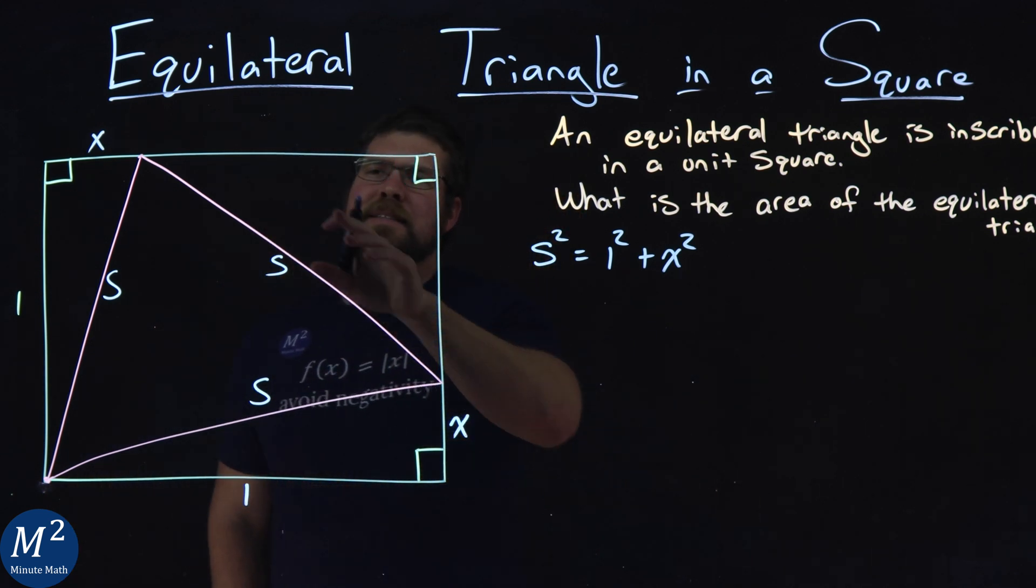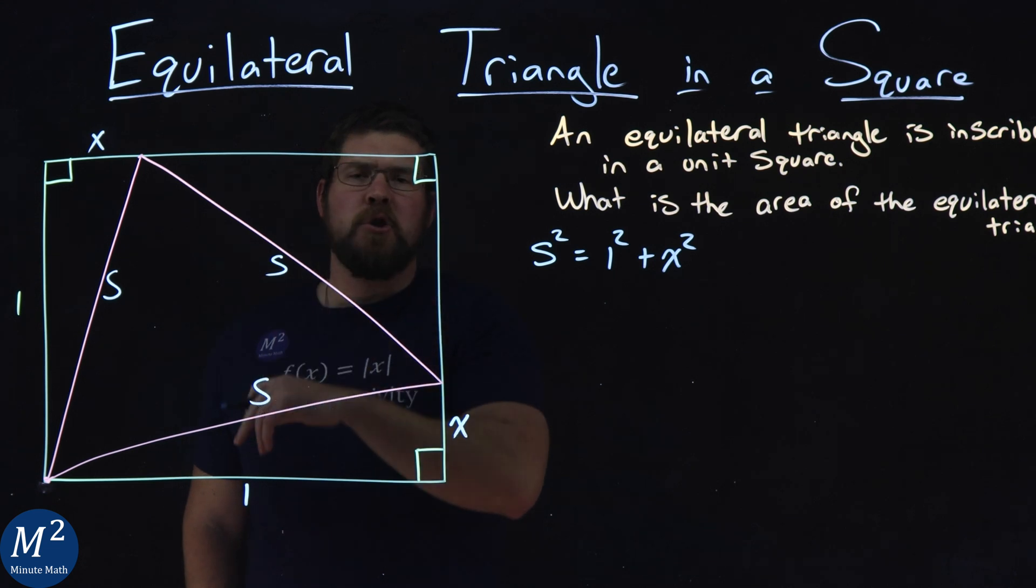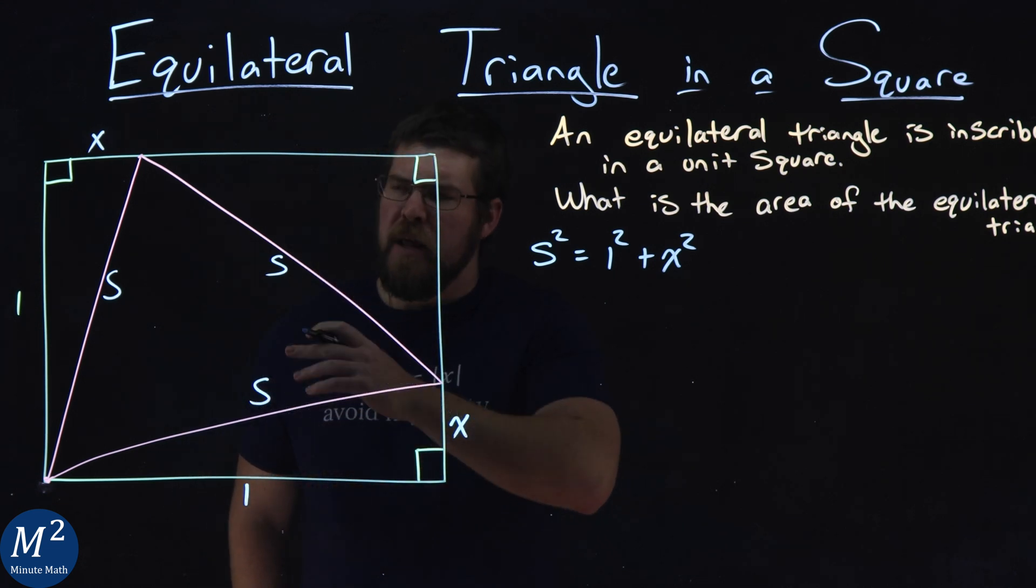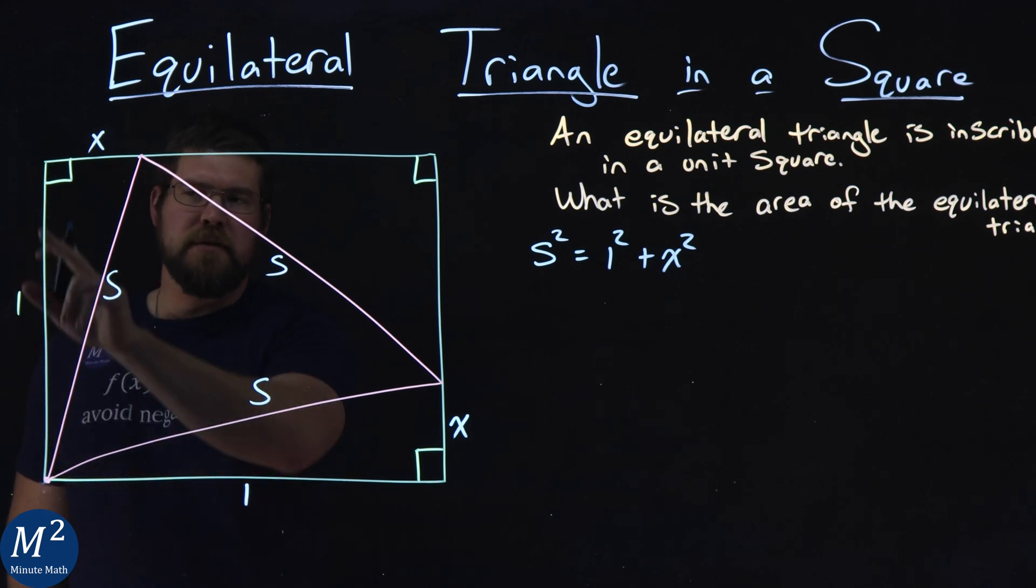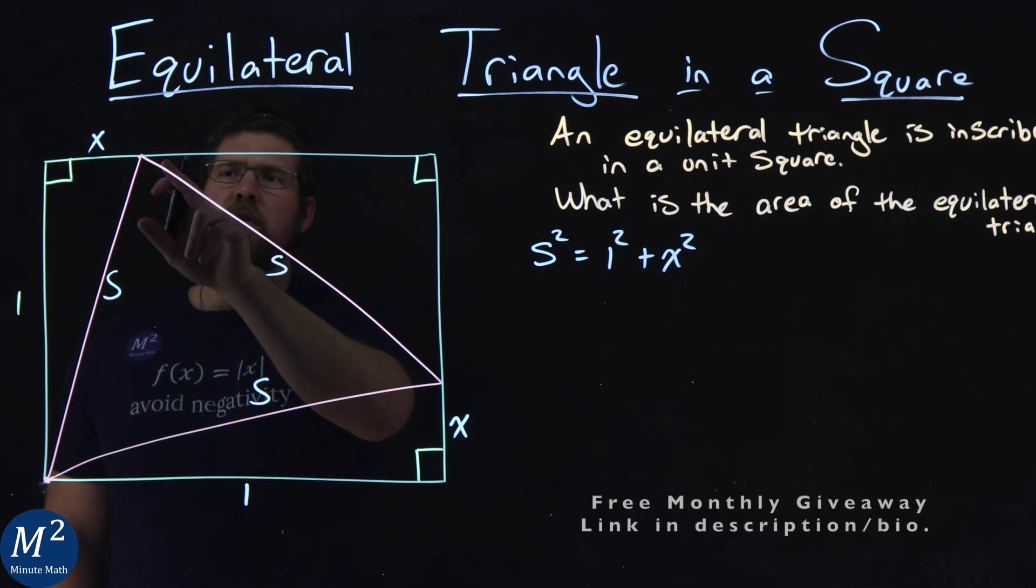Now, I want to also write this, the other length right here, in terms of X. And notice the whole unit right here has a length of one, side length of one for the square.